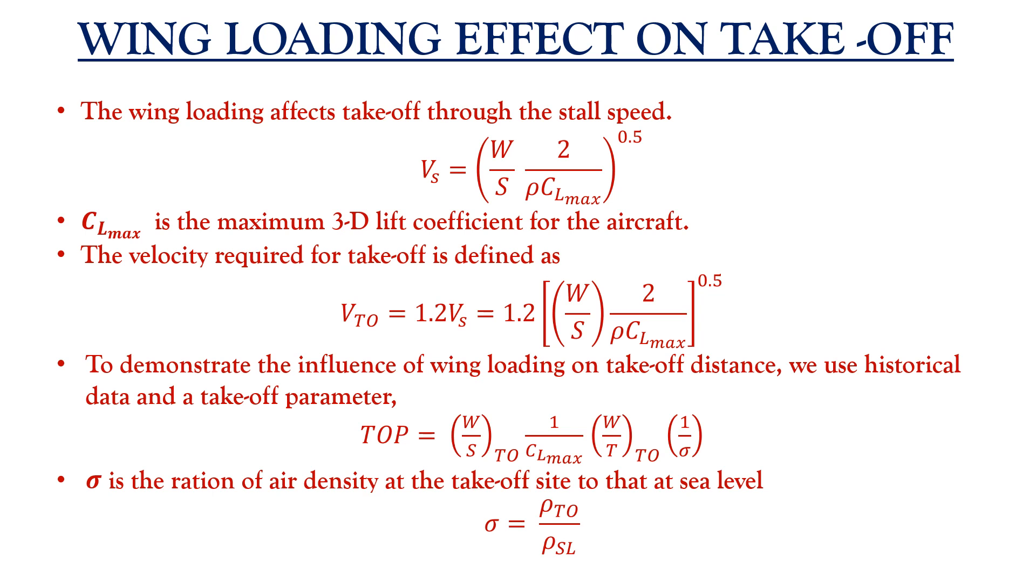The velocity required for takeoff can be defined as Vto that equals 1.2 times Vs. Now, at this point, we intend to demonstrate the influence of wing loading on takeoff distance and get the first estimate of takeoff distance. For this, we use the data from literature and takeoff parameter which is represented as W by S at TO times 1 by CL max times W by T at takeoff times 1 by sigma. Here, sigma is the ratio of air density at the takeoff site to that of sea level.